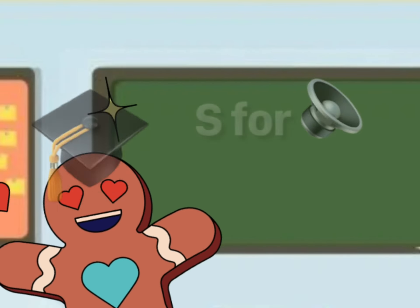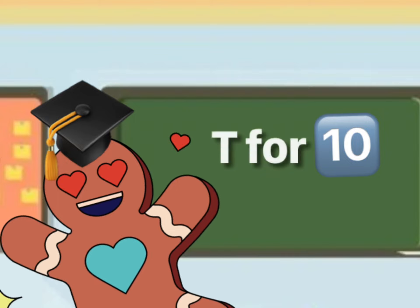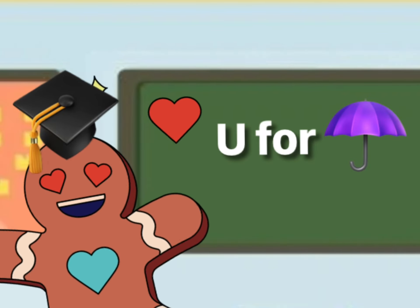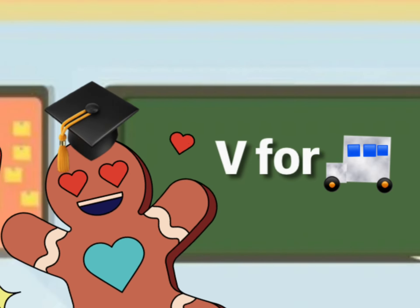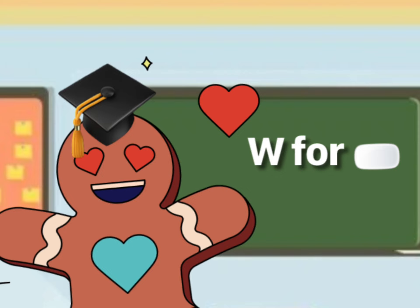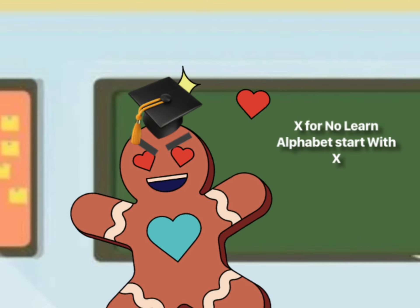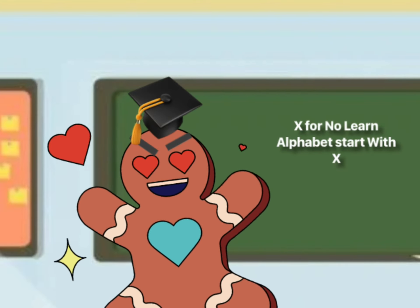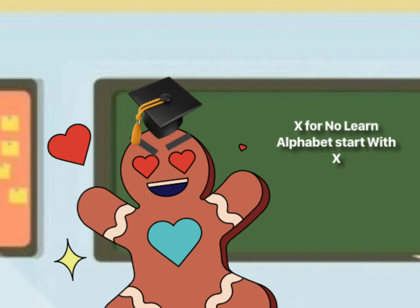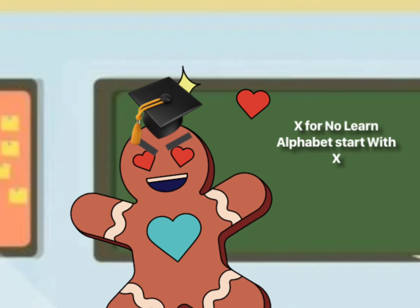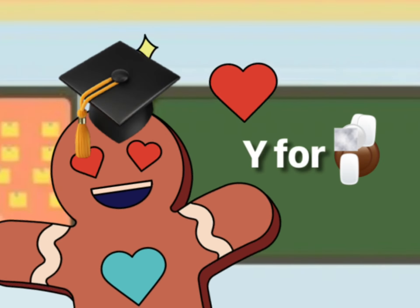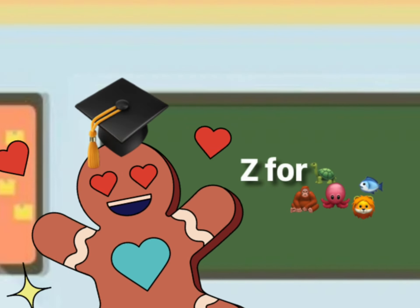R for radio, S for sound, P for pen, U for umbrella, V for van, W for white, X for no. Learn alphabets start with S. Y for yuck, Z for zoo.